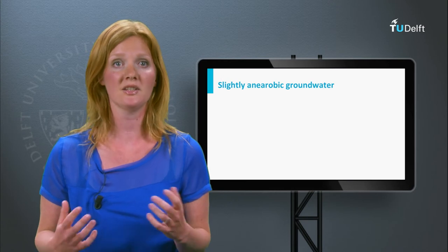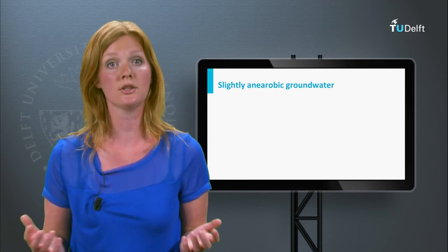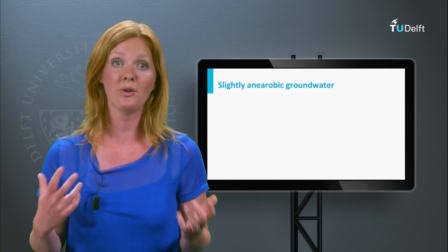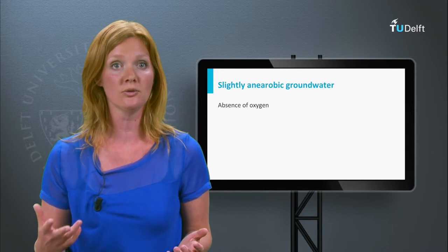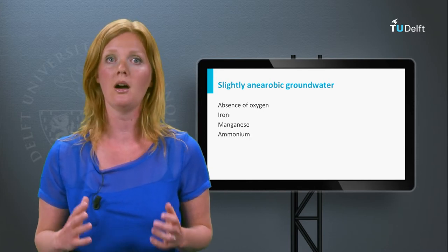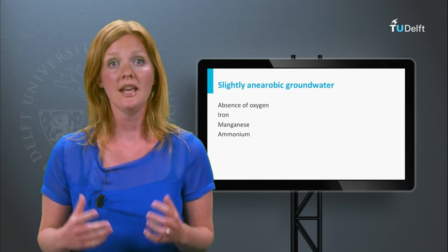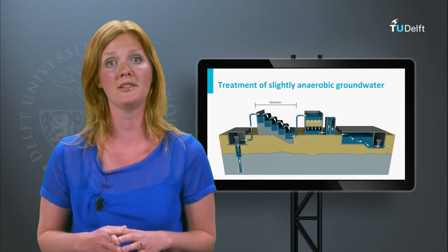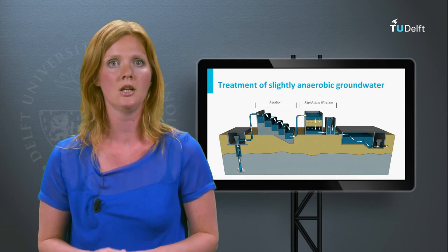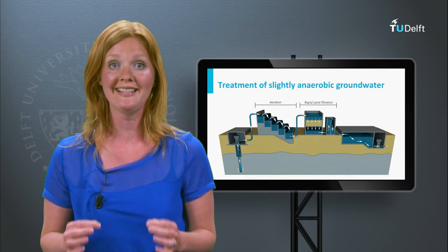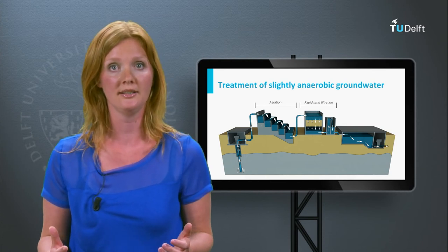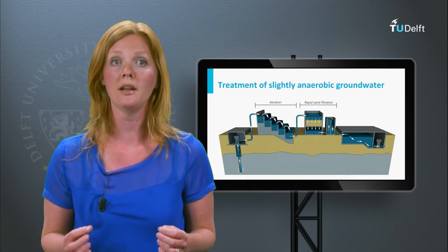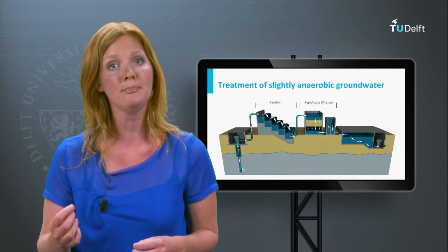The water treatment scheme for slightly anaerobic groundwater differs from the scheme for aerobic groundwater. Slightly anaerobic groundwater is located under a confining layer and is characterized by the lack of oxygen and presence of ammonium, iron, and manganese. In general, the treatment of slightly anaerobic groundwater consists of aeration followed by submerged granular media filtration. Aeration is needed for the addition of oxygen and the removal of carbon dioxide. The oxygen is used for the oxidation of ferrous iron (Fe²⁺) to ferric iron (Fe³⁺).